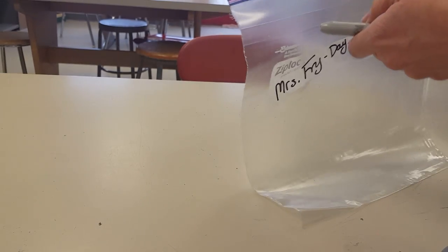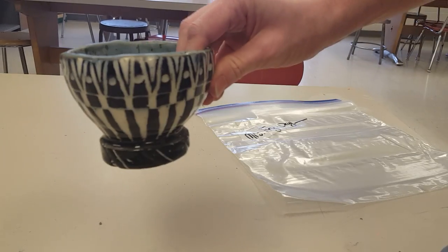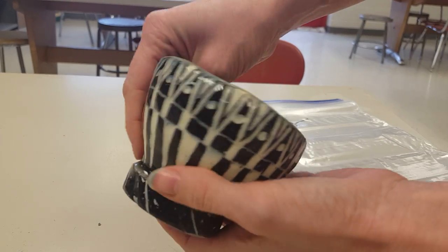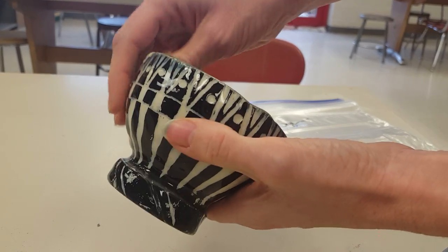Today you're going to be making a pinch pot. A pinch pot is the oldest form of pottery. It looks something like this, but it's actually created using your thumb and your fingers and pinching the clay out, something like that.